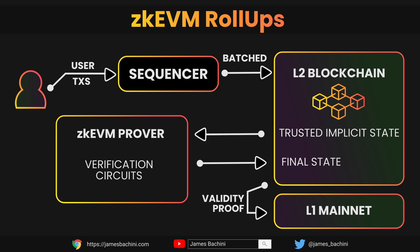The job of the ZK EVM prover is to prove that those transactions made those changes to the state. It essentially uses zero-knowledge circuits to compute the same information as the Ethereum virtual machine. The final state is then stored on the layer 2 blockchain and the validity proof is sent to the layer 1 Ethereum mainnet.